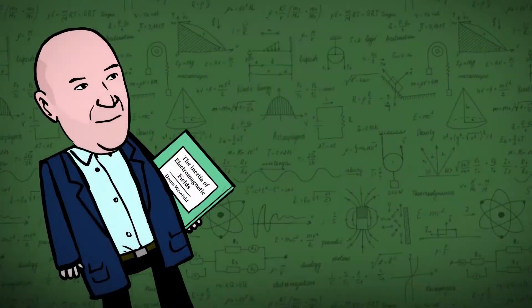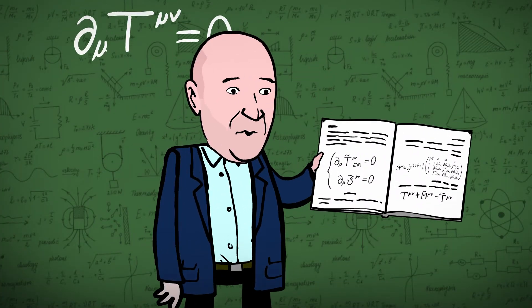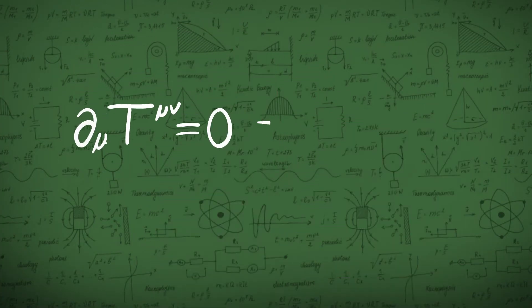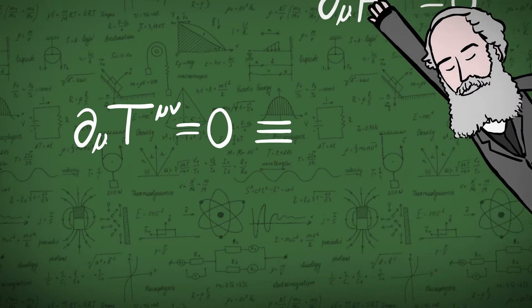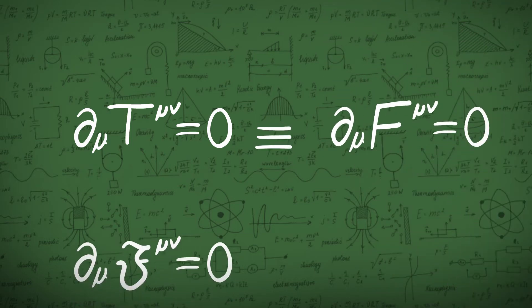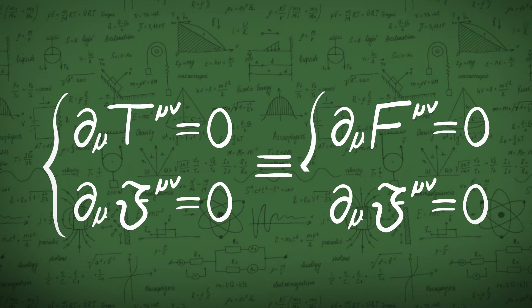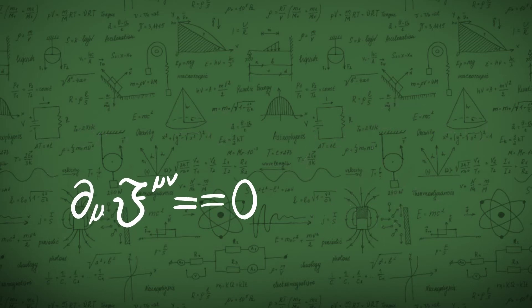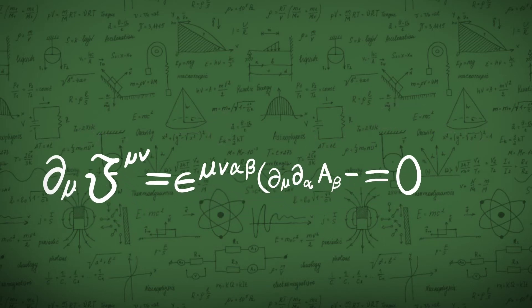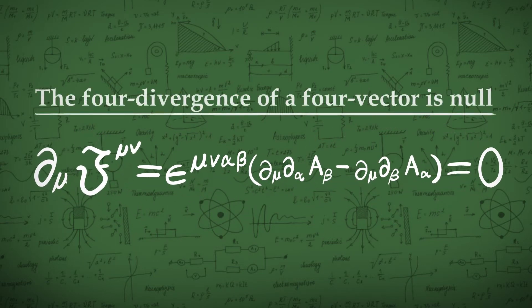In the paper, we prove that the energy momentum conservation equations are equivalent to Maxwell's equations in conjunction with the divergence of the dual tensor. The four equations of the divergence of the dual tensor are just a mathematical expression stating that the four-divergence of a four-vector is zero.